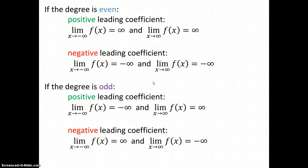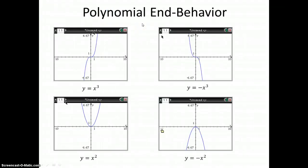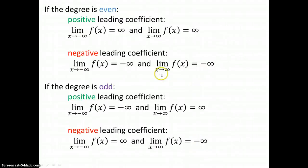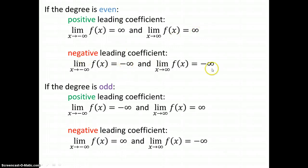In summary, if the degree is even, then we're going to look at the leading coefficient. The leading coefficient in this case was one and negative one, so we're looking to see if those are positive or negative. If it's positive, then we're going to go up and up. If it's negative, we're going to go down and down.